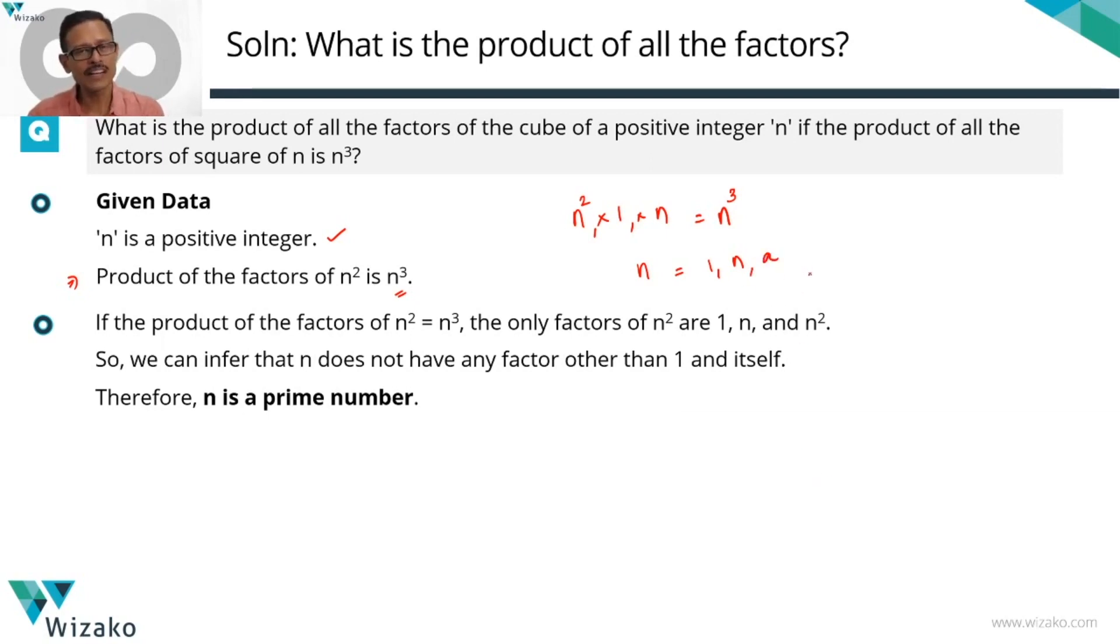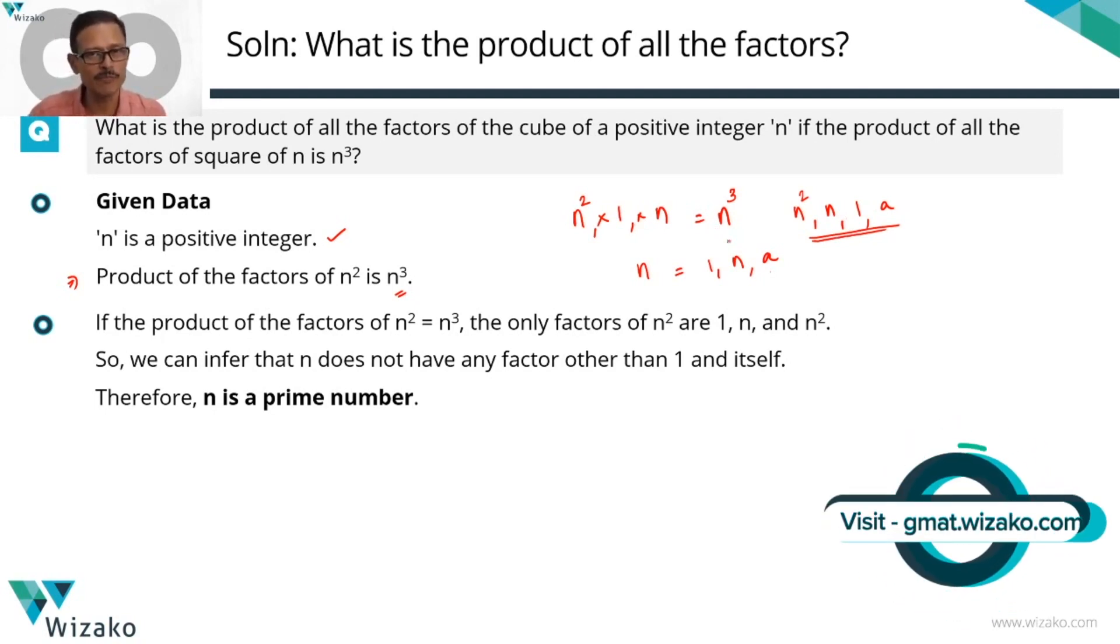So what will all be the factors of n square? n square will have n square as a factor. We'll definitely have n as a factor. We'll have one as a factor and forget everything else. It's going to include a as a factor because if a is a factor of n, then a will be a factor of n square. Then the product of all of these numbers is going to be equal to a times n cube at least, if not more. But it is n cube. So which essentially means that n could not have had any factor other than 1 and n. If n had only two factors, then n is a prime number.